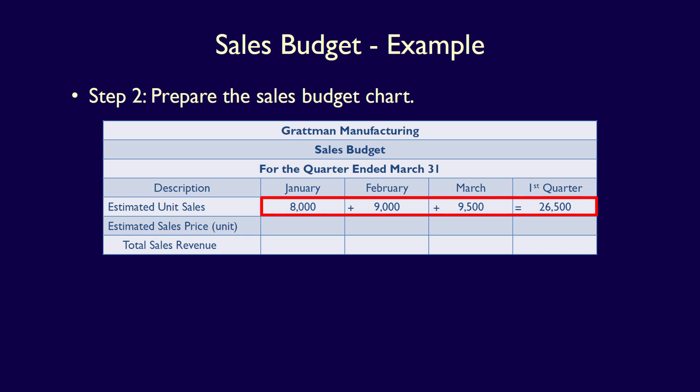It should be noted that summing the columns is appropriate to obtain the number of units in the first quarter column, but this is not always the appropriate process for every single row. For instance, for the estimated sales price row — which in this case is $300 per unit — we place the same amount in every column, January through to the first quarter: $300.